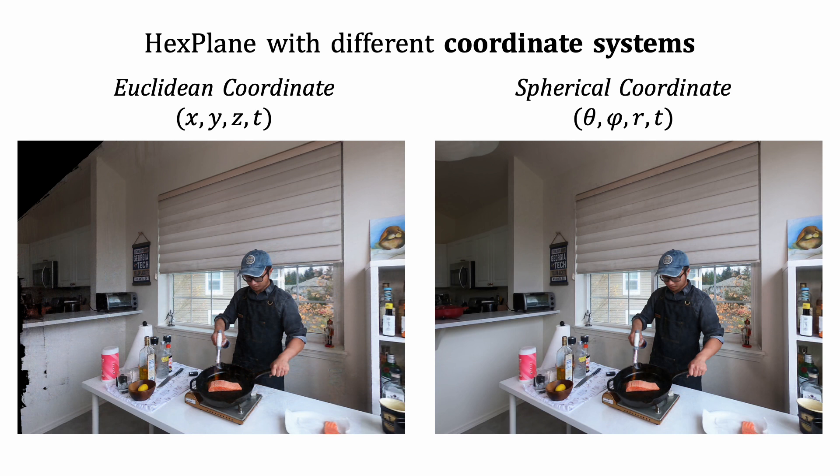HexPlane is very flexible and robust to various designs. Its spatial feature plane axes could be either Euclidean coordinates or spherical coordinates as well. Given spherical coordinates as feature axes allows it to represent unbounded scenes with far-away background like NeRF++.